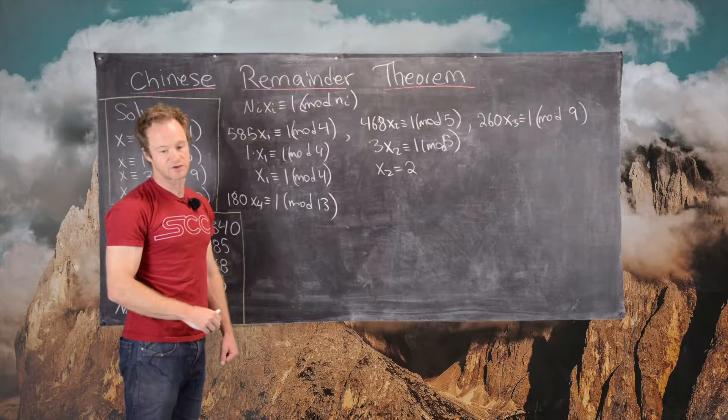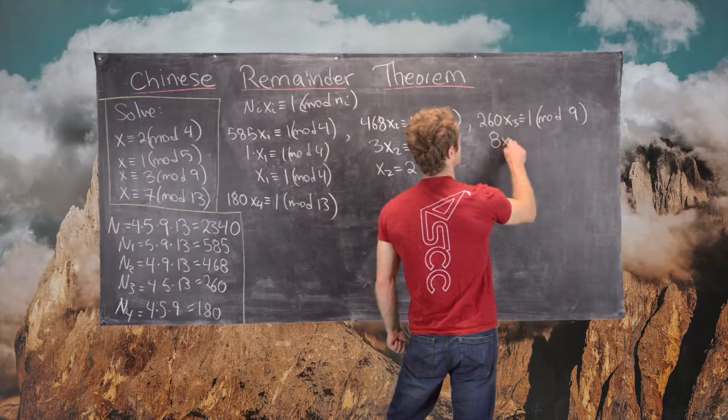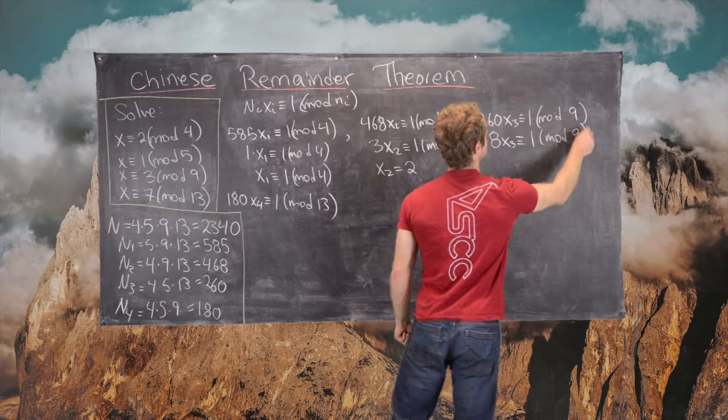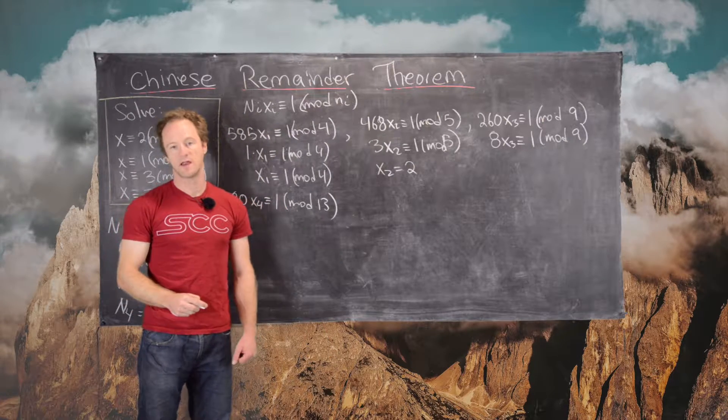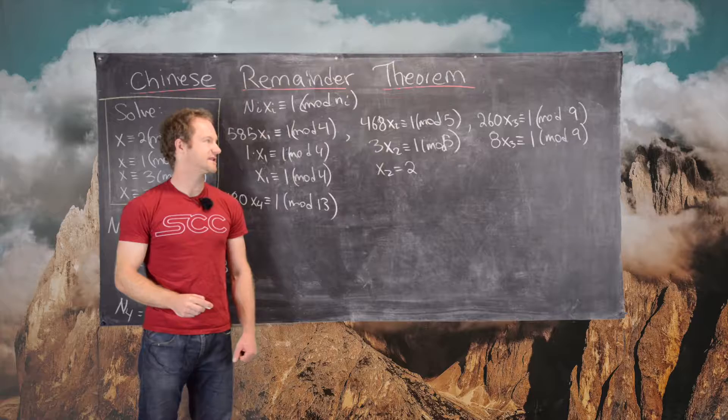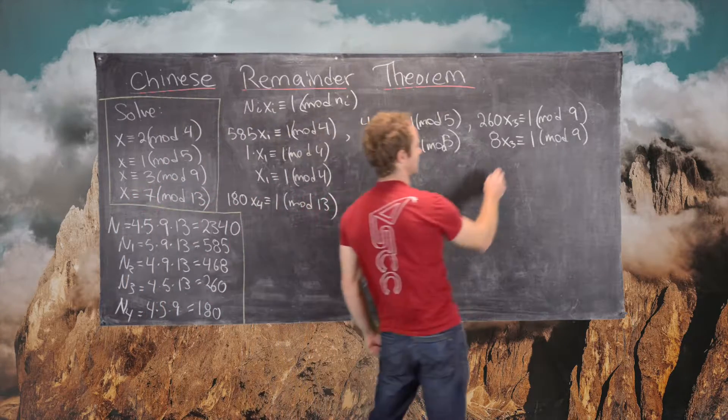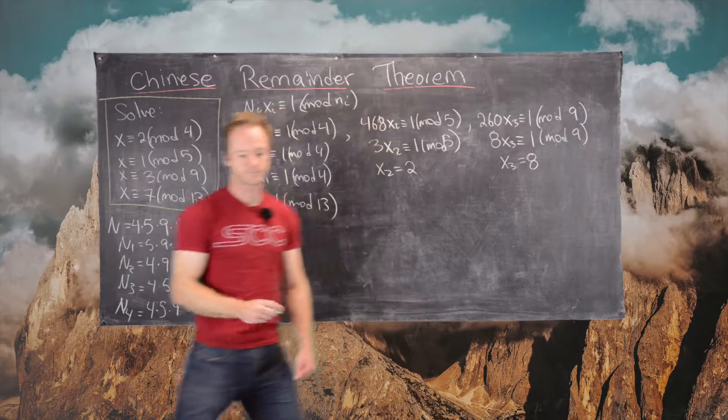Now let's look at this next one. 260 is congruent to 8 mod 9, so we have to solve 8 X3 congruent to 1 mod 9. We notice that 8 times 8 is 64, which is 1 more than 63, which is a multiple of 9. So we can take X3 to be equal to 8.